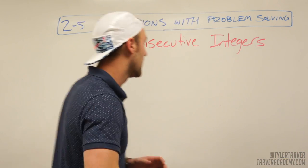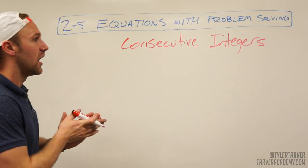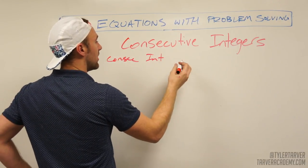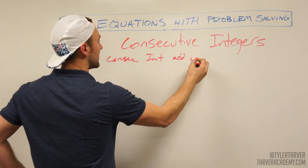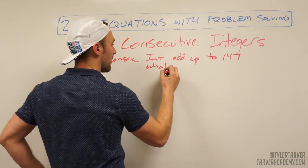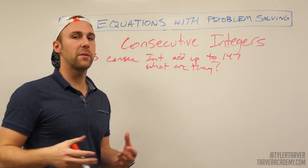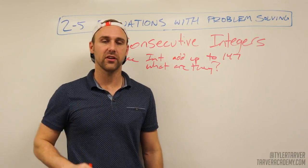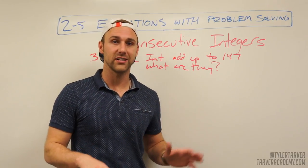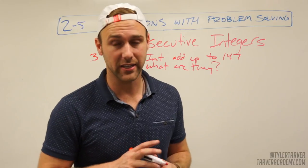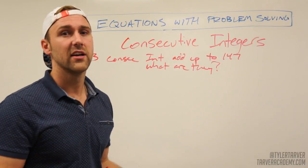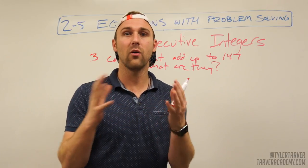Let's look at an example: the sum of three consecutive integers is 147. What are they? A lot of people just guess and check on a calculator. If you do guess, think: three numbers adding to about 150, split into three chunks — roughly 50, 50, 50. So your three numbers are probably somewhere around 48 to 53. But I'll show you the equation method so you can write it out on an open-response question.